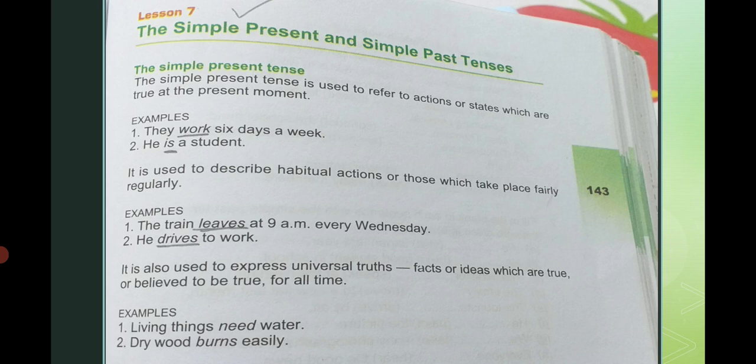Simple present tense is also used to describe habitual actions and those which take place fairly regularly. اس کے علاوہ یہ habitual actions اور regular basis پہ کیے جانے والے actions کو describe کرتا ہے۔ Examples: 'The train leaves at 9 a.m. every Wednesday.' 'He drives to work.' یہاں leaves اور drives ہمارے habitual actions کو define کر رہے ہیں۔